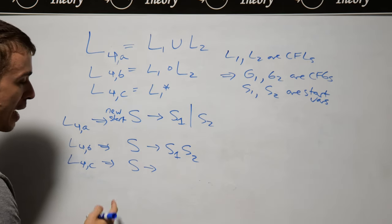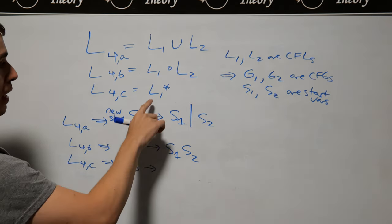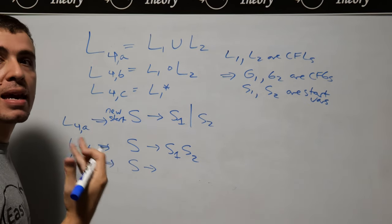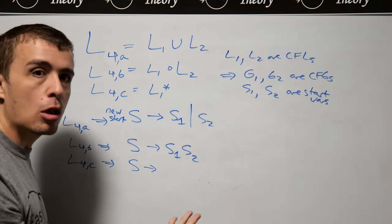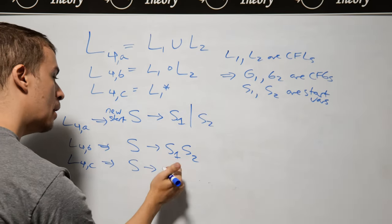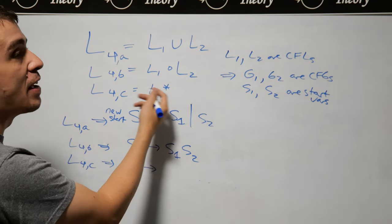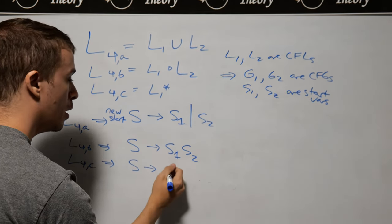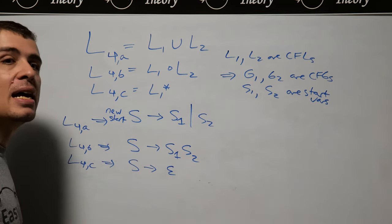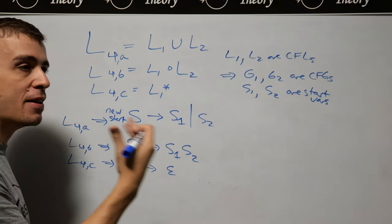So if we have an S here, it doesn't matter whether L1 can make the empty string itself, L1 star always has the empty string in it. So then this grammar must definitely generate the empty string, even if L1 did or didn't, it doesn't matter. So here, I'm going to force that it can make the empty string, even if it didn't before.